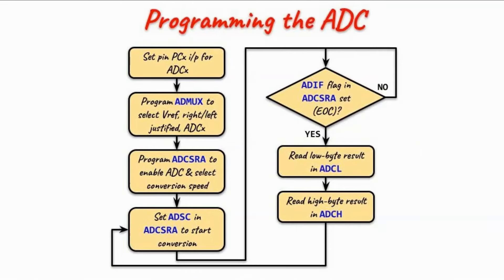This flowchart shows the steps needed to program the ATD converter. First, we need to set one of the pins of port C for input to be used as an analog input. Then we program the ADMUX register to determine the type of V reference, the type of justification, and which analog channel to use. Then we program the ADCSRA register to enable the ATD converter and select the conversion speed.